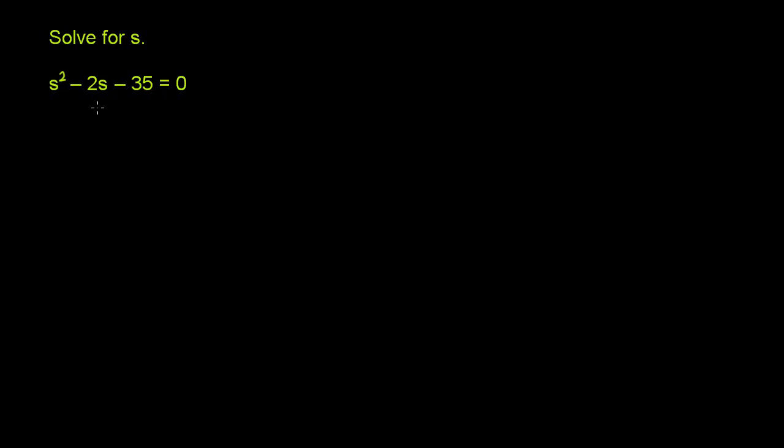And then there's a bit of a shortcut when you have a 1 as a coefficient over here. When you factor by grouping, you think about two numbers whose sum is going to be equal to negative 2. So you think about two numbers whose sum a plus b is equal to negative 2, and whose product is going to be equal to negative 35. A times b is equal to negative 35.